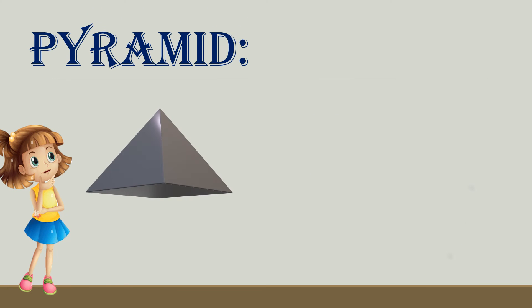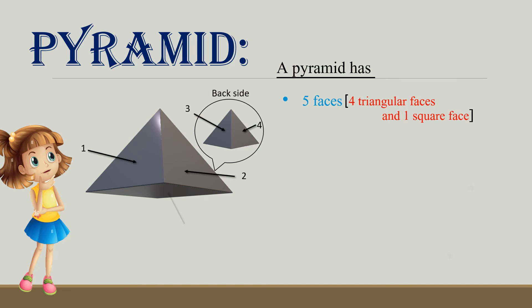Pyramid. A pyramid has five faces: four triangular faces - one, two, three, four - and one square face. Total five faces. Eight edges: one, two, three, four, five, six, seven, eight. And five vertices.